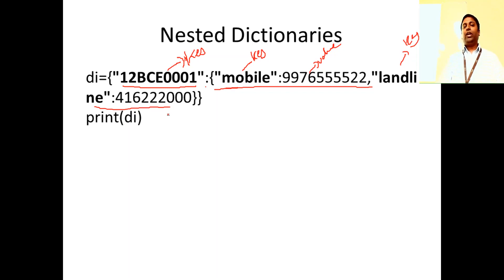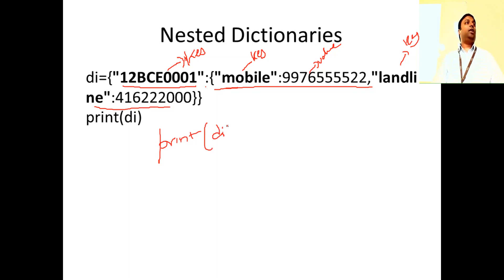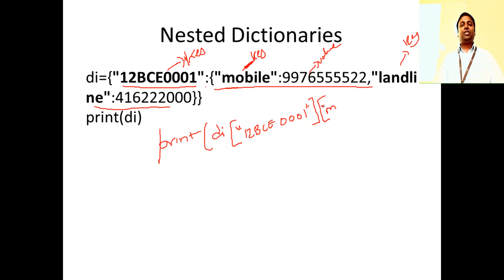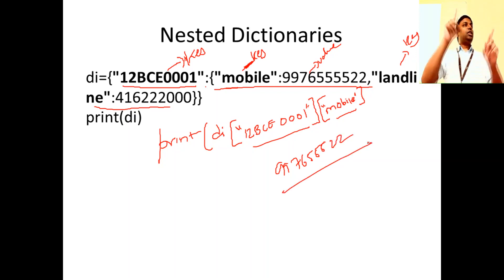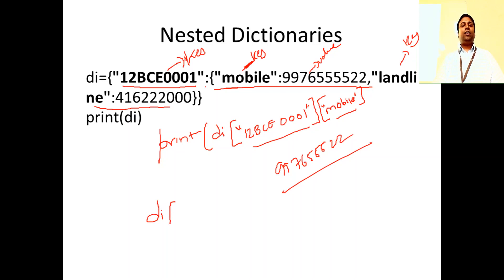How do you access the mobile number for this student? You print: di['12BCE001']['mobile'] — first give the outer key '12BCE001', then give the inner key 'mobile', and it prints the value 9976555552. To print the landline number: di['12BCE001']['landline']. That's how you use square brackets with multiple keys for nested dictionaries.